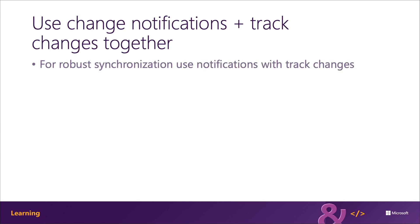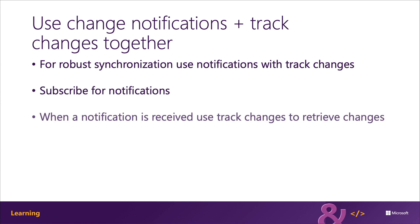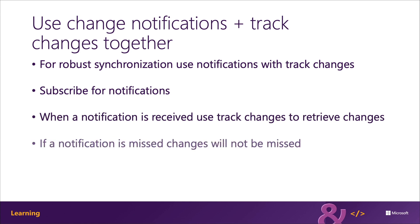Your apps can use change notifications and track changes together to create a robust, reliable, and performant experience. Change notifications notify your app when something changes with a collection supported by Microsoft Graph. When Microsoft Graph notifies your application that something changed, instead of requesting all of the information on the entity that triggered the notification, your app can use the Delta Query to retrieve all the changes that have happened since the last request.